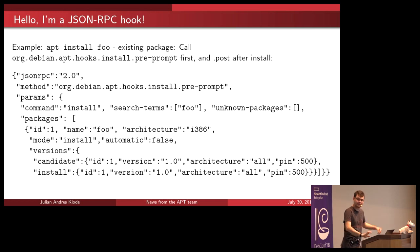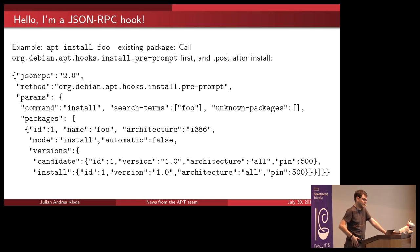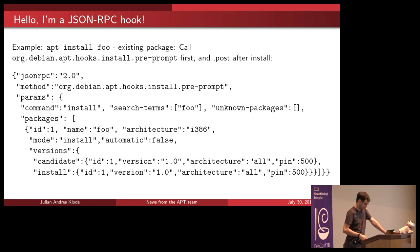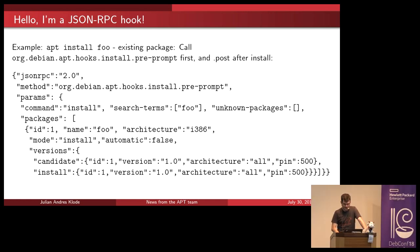Here is an example hook. We're trying to install an existing package called foo, and this is a pre-prompt hook because it runs before the yes/no prompt. It gets multiple parameters: the command used (in this case, install), the search terms which are the arguments to the command, and any unknown packages passed on the command line — a subset of the search terms that could not be resolved. Finally, there's the list of all resolved packages and versions available, like the candidate version and the version selected for installation.